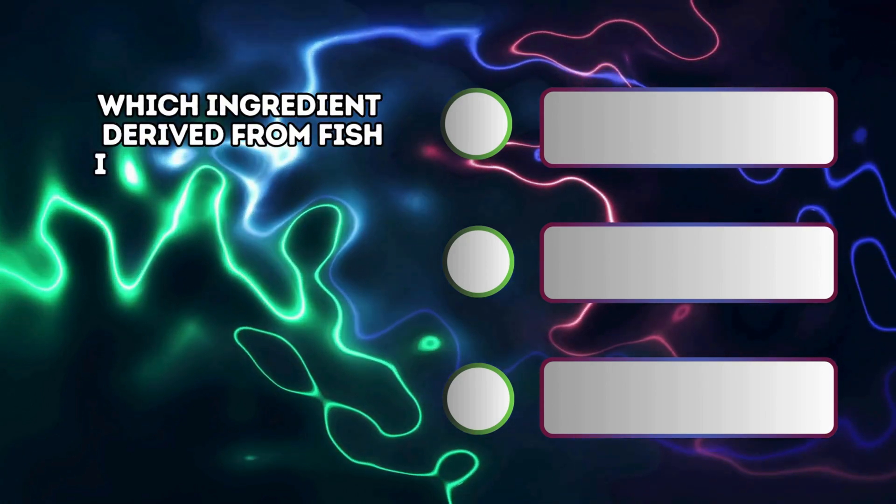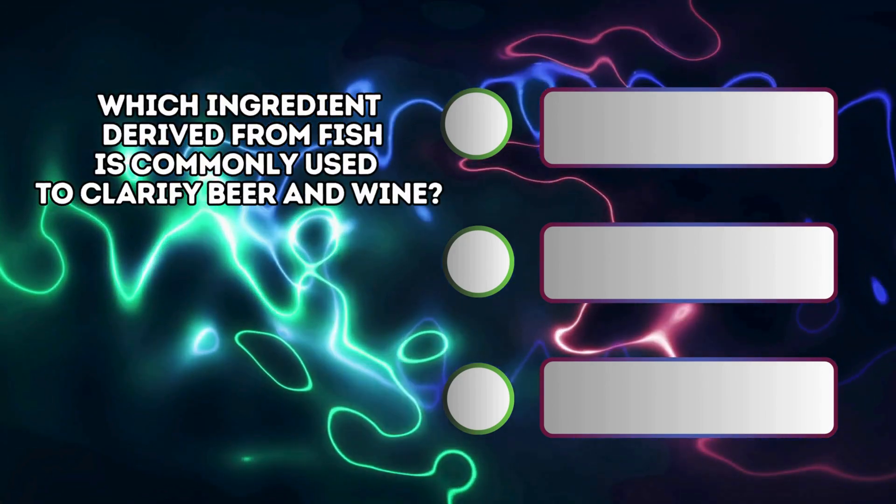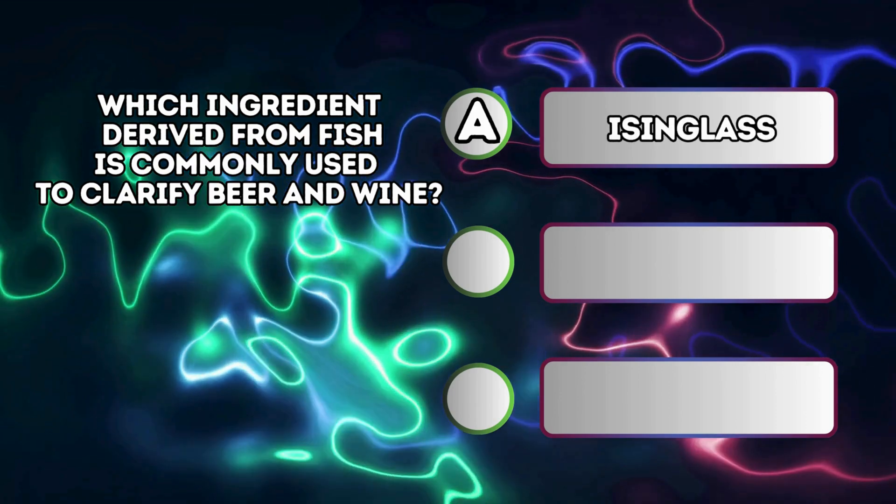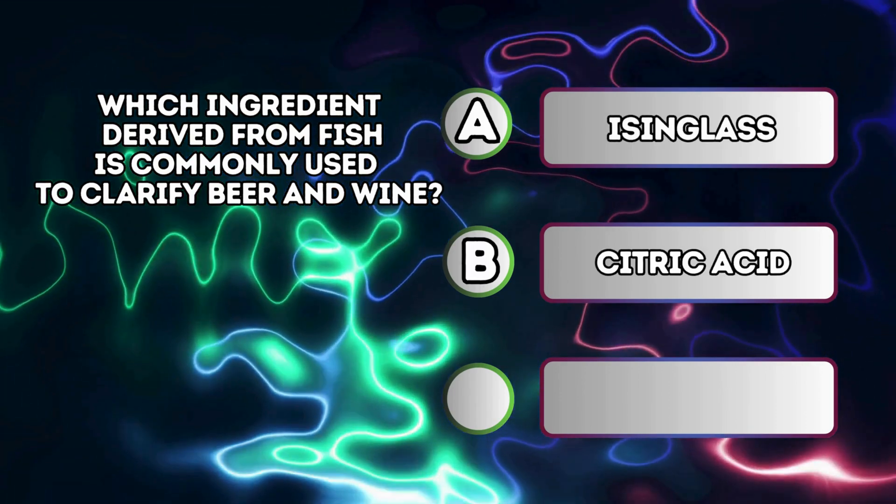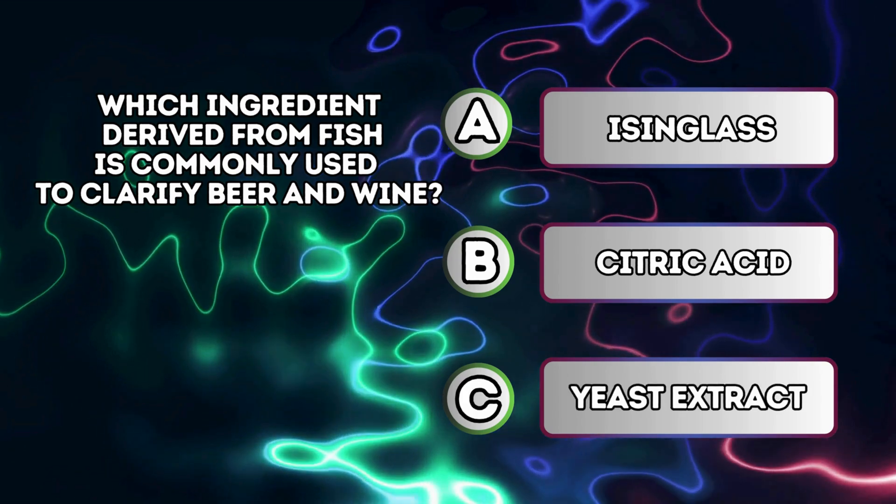Which ingredient derived from fish is commonly used to clarify beer and wine? A. Isinglass B. Citric acid C. Yeast extract